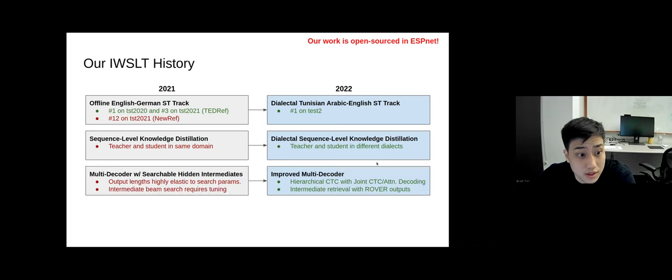The second technique that we built on is the multi-decoder architecture with searchable hidden intermediates, which is an end-to-end modeling technique which we found previously to be very strong but has some drawbacks. Namely, the output length is highly elastic to the search parameters, and this is because the intermediate representations may require a beam search, and this would introduce another set of hyperparameters to tune.